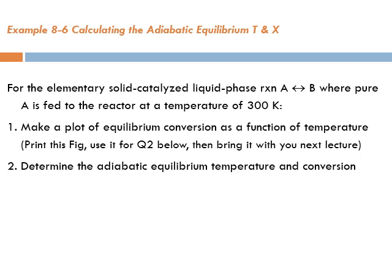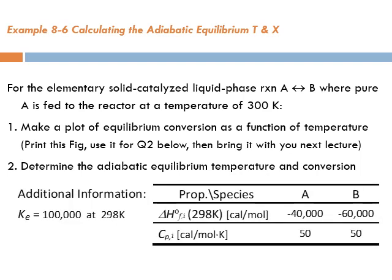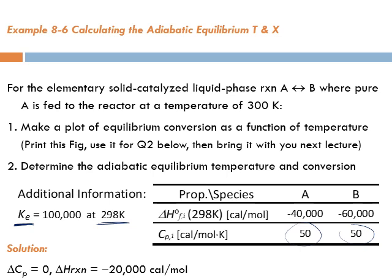We also want to determine the adiabatic equilibrium temperature and conversion. The given data includes Ke at a reference temperature, the standard heats of formation for A and B, and the heat capacities Cp. The Cp values are equal, which means delta-H of reaction is not a function of temperature. From the heats of formation we calculate delta-H of reaction, confirming the reaction is exothermic.